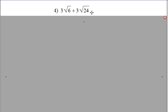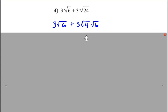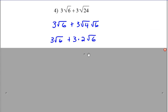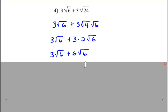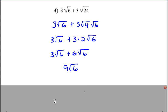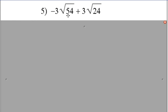The square root of 6 is simplified. The square root of 24 can be simplified, and negative 4 times the square root of 5 can be simplified.